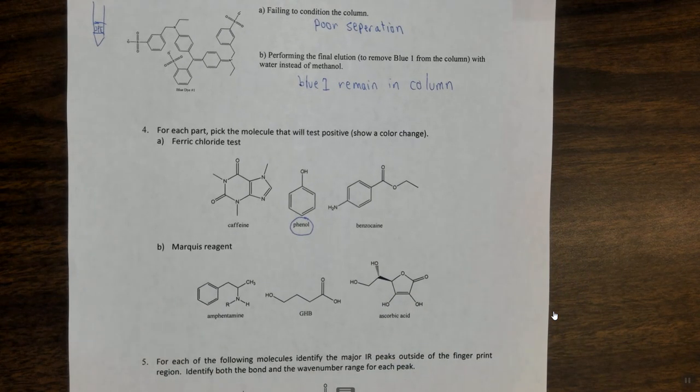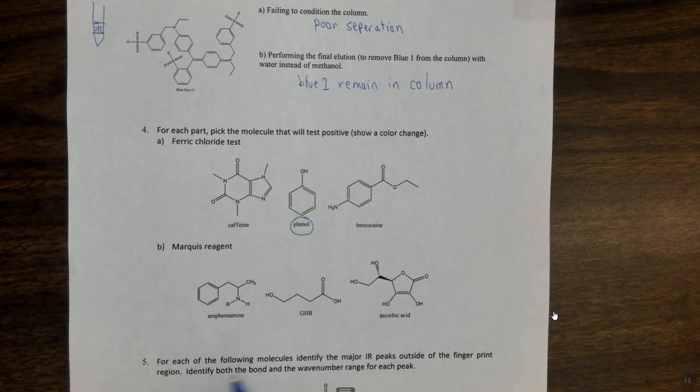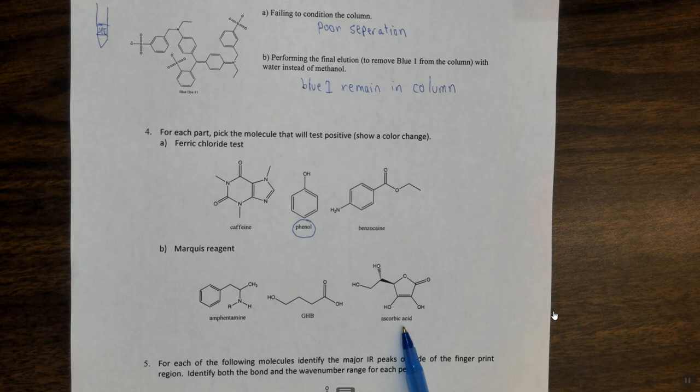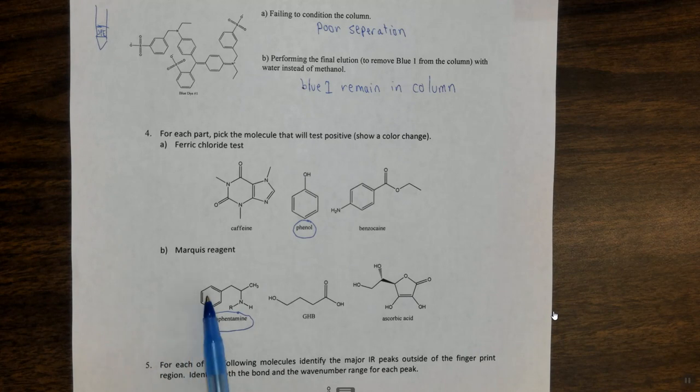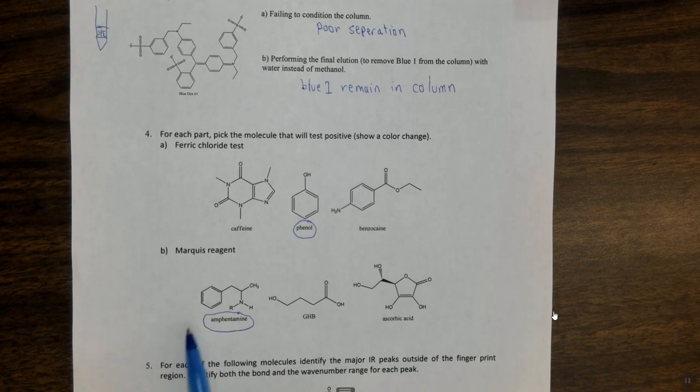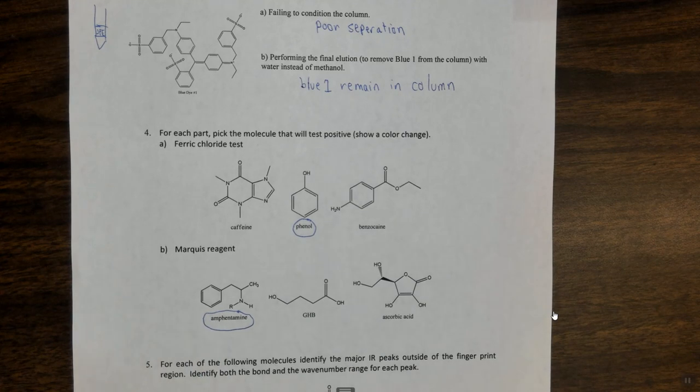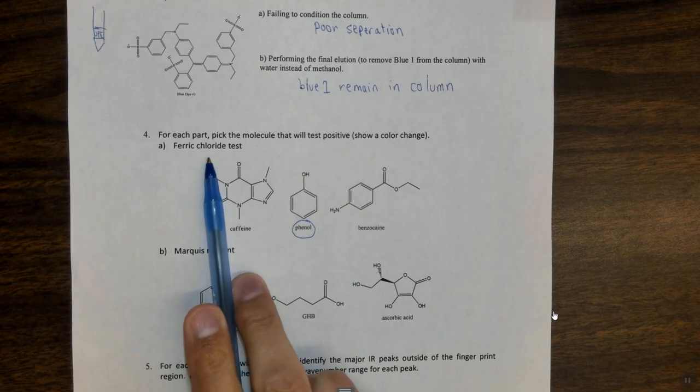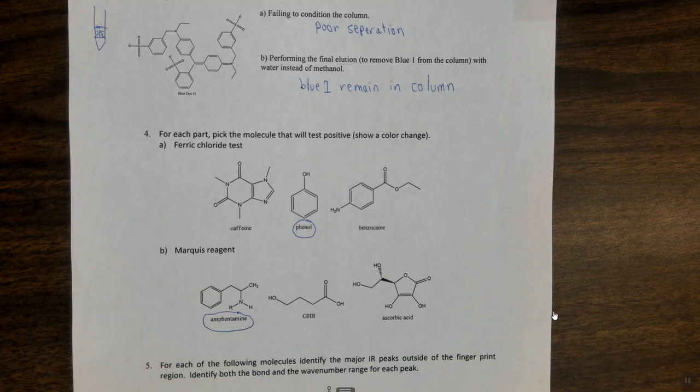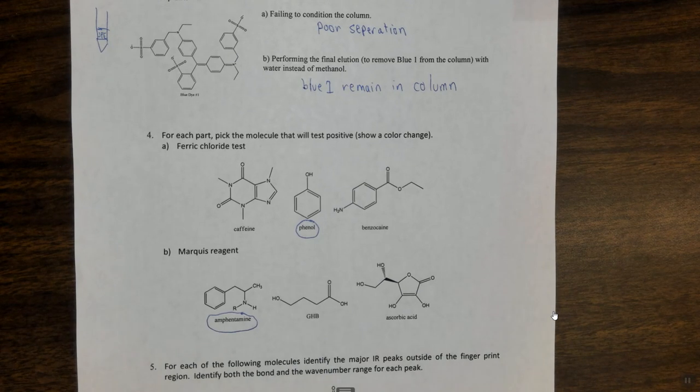Next one, marquee reagent. Marquee reagent tests for some aromatic rings. So here we have amphetamine, GHB, and ascorbic acid, commonly known as vitamin C. In this case it's going to test positive for amphetamine because it does an electrophilic aromatic substitution and it essentially brings two of these rings together, and basically that causes a color change. So that is basically how it works. Ferric chloride tests test for phenols and marquee reagent tests for aromatic rings. I will mention with the marquee reagent there is some differences in color based on different drugs, so it can be a little more selective than just simply testing for an aromatic ring. However in this case neither of these molecules have an aromatic ring, so neither of them are going to test positive for the marquee reagent.